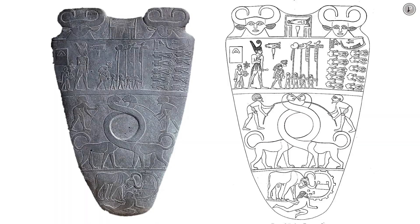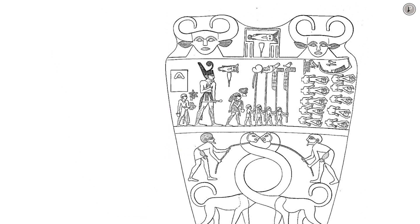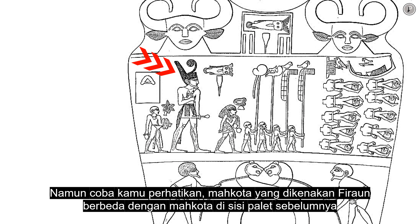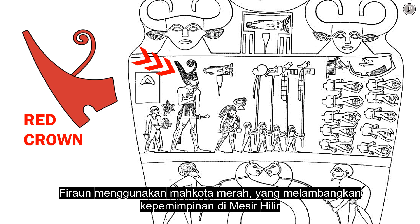Now let's look at the other side of the palette. On this side, Narmer seems to be doing a procession. We will still find the same things: the name of Narmer and the figure of a man who carries the pharaoh's sandals. But take note — the crown worn by the pharaoh is different from the crown on the previous side. The pharaoh wore the red crown, which symbolized the throne of Lower Egypt.